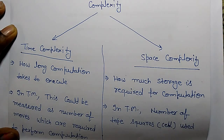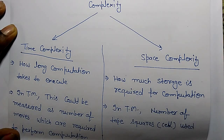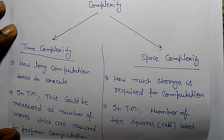Today we are going to learn complexity of algorithms. There are two types of complexity: time complexity and space complexity. Time complexity means how long computation takes to execute for a particular algorithm. If there is a problem and you have designed some algorithm for that problem, we calculate how long it takes to execute on a particular input. That is time complexity.